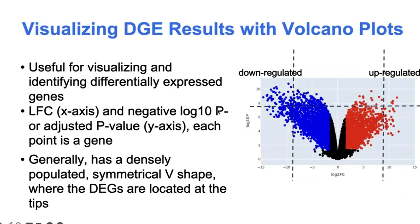For visualizing the results of a differential gene expression analysis, one of the most popular types of plots is the volcano plot. The log-fold change is plotted on the x-axis, and statistical significance is plotted on the y-axis — usually shown as the negative log10 of the p-value, so larger values are more significant. These plots generally have a symmetrical V-shape, with most genes near the bottom junction representing non-differentially expressed genes. Up-regulated genes appear towards the top right and down-regulated genes towards the top left. A log-fold change and p-value cutoff is typically indicated to show which genes are selected as differentially expressed.